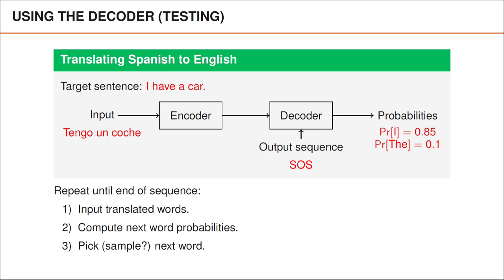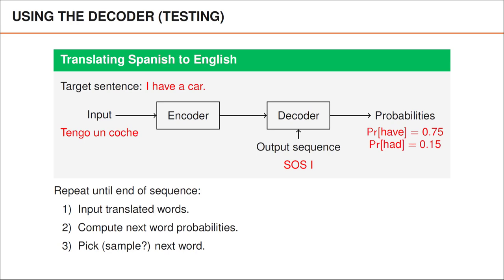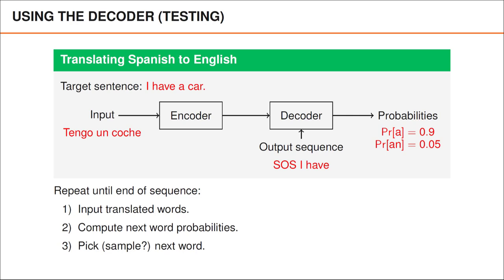Let us look at how this might work in this example. When translating the first word, we haven't actually translated anything, but we then feed a start of sequence token into the decoder, here denoted SOS. Perhaps the network then predicts that the first word of the sentence is 'I' with probability 0.85, 'the' with probability 0.1, and that the probabilities of other words are 0.05 in total. In that case, we are likely to select 'I' as the first word in our translation. Once we have selected 'I' as the first word, we can feed that into the decoder and ask the decoder to predict the probabilities of the next word. In this case, perhaps it predicts the next word to be 'have' with probability 0.75, such that we are likely to select 'have' as the next word.